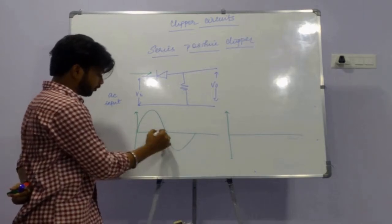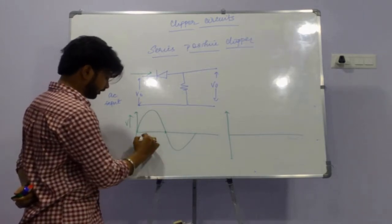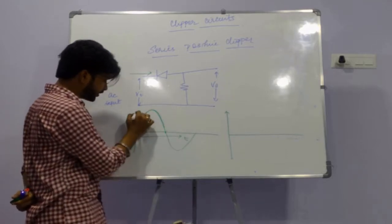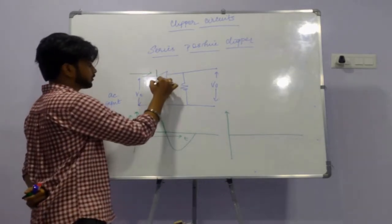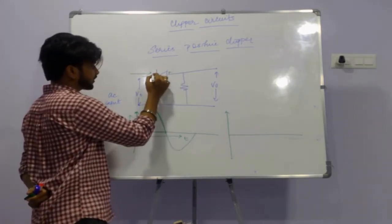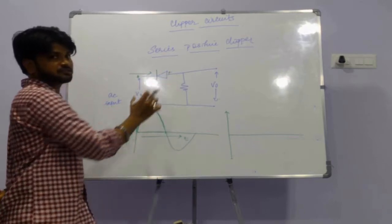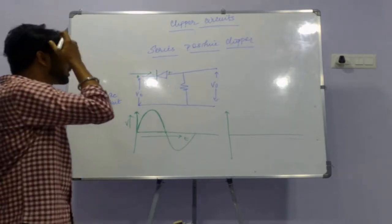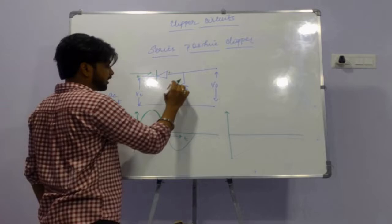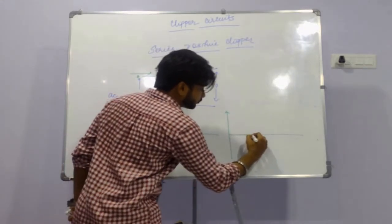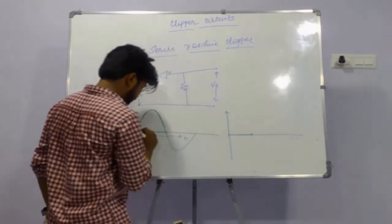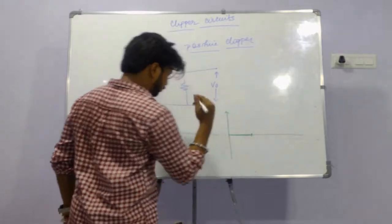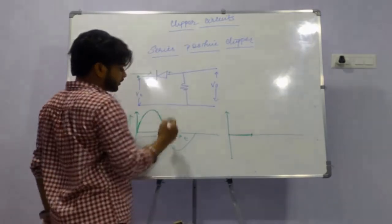In the positive half cycle, all the voltage values are positive in nature, but the negative of the diode is connected to the positive of the voltage source. This is a reverse bias condition, so no current will pass through the diode. Therefore, in the first half of the oscillation there will be no wave in the output.